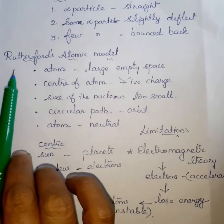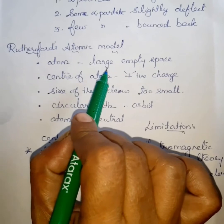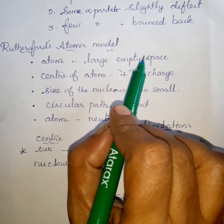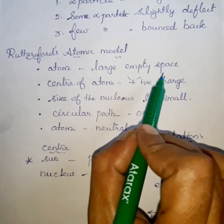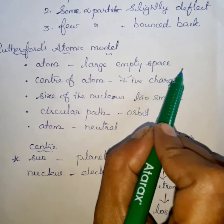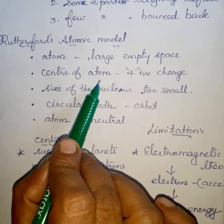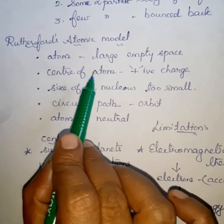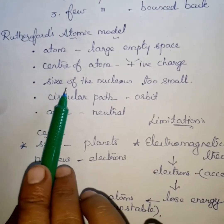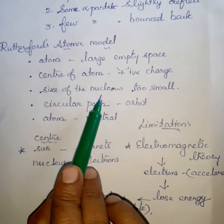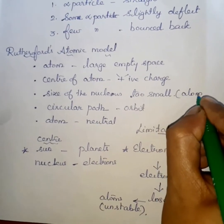Now you have to study the observations of Rutherford's atomic model. First point: the atom contains a large empty space, because most of the alpha particles passed in a straight line. Second point: there is a positively charged mass at the center of the atom, known as the nucleus. Third point: the size of the nucleus is very small compared to the size of an atom.